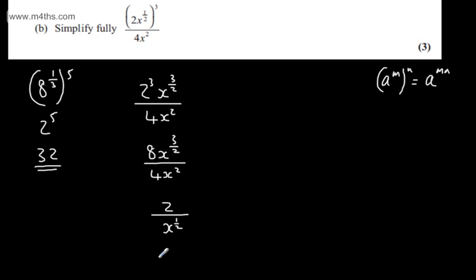We can leave it like so, or we can write this as 2x to the power of minus 1 half. Three marks in total for the question. Either one of these two answers will be perfectly fine.